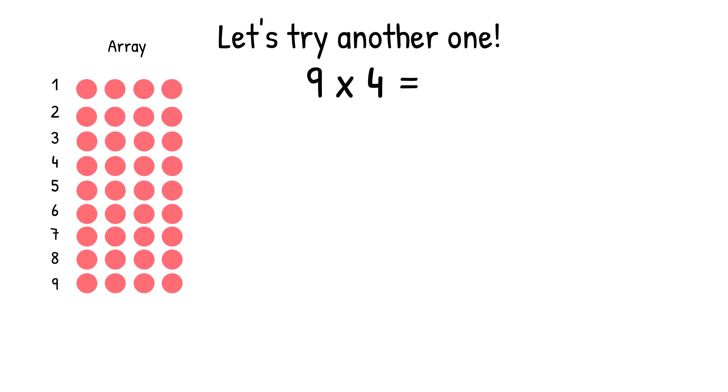Let's try another one. Let's look at the equation 9 times 4. First, we're going to draw our array, so 9 rows with 4 in each row. Next, we need to choose a place to break apart the array. I'm going to draw my line straight down the middle.